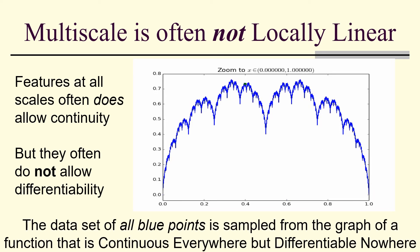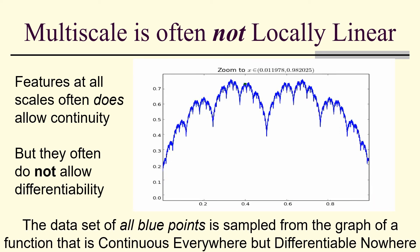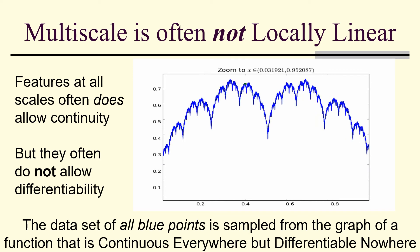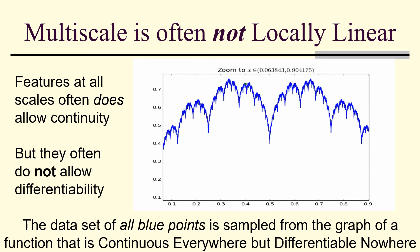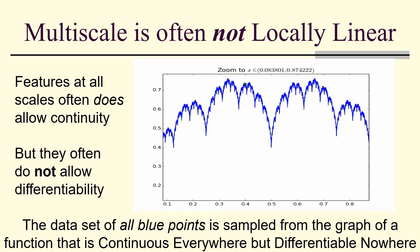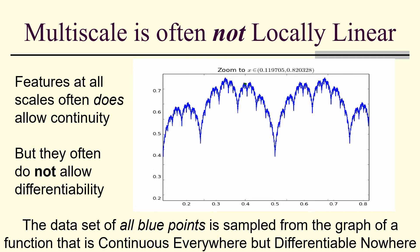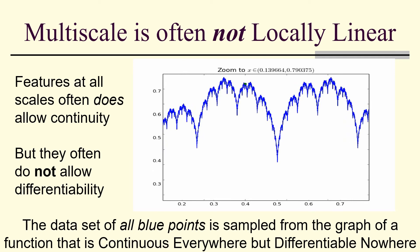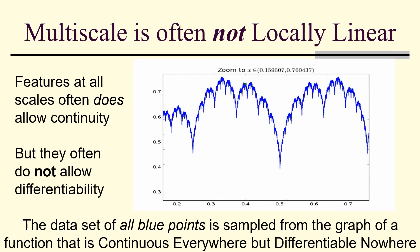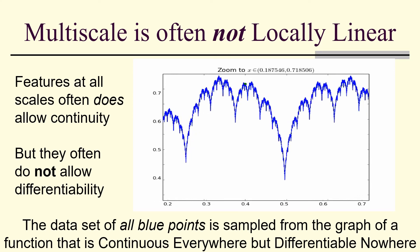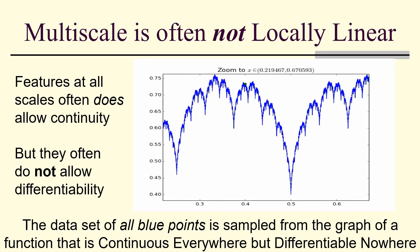So, for example, if I zoom in on this curve, which is continuous everywhere, but differentiable nowhere. There's not a single point where I have a tangent line. In other words, there's not a single point on this curve where I can say there is only one scale.